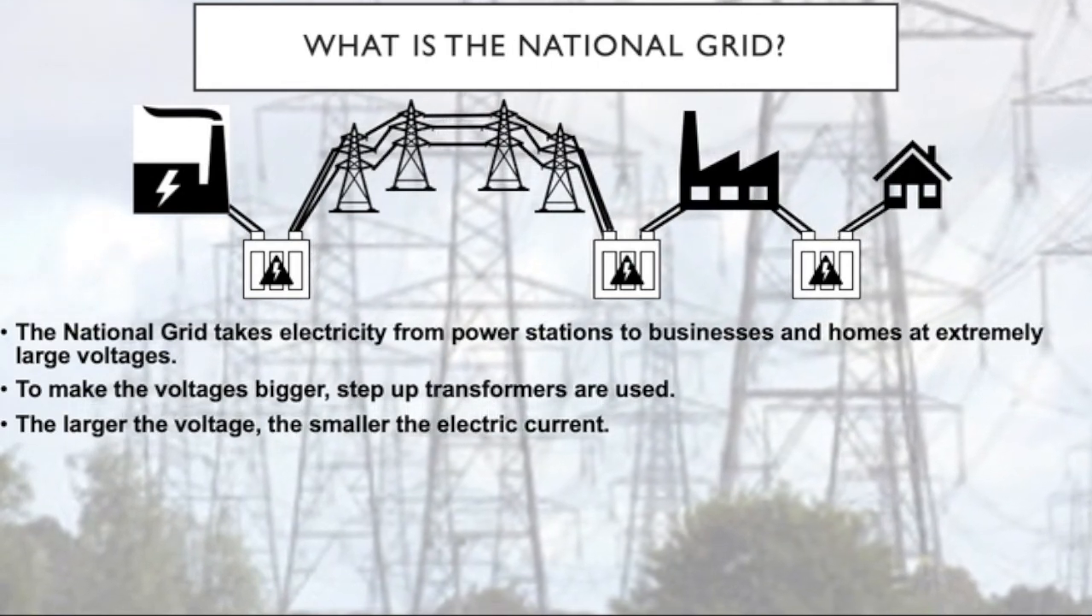So what is the national grid then? The national grid takes electricity from power stations to businesses and homes at extremely large voltages. To make the voltages bigger, step-up transformers are used. The larger the voltage, the smaller the electric current. It does this to limit the energy lost by heating from the wires and makes it more efficient. The smaller the electric current in a wire, the less heat is lost. But these large voltages would not be safe for homes. To make voltages smaller, step-down transformers are used.